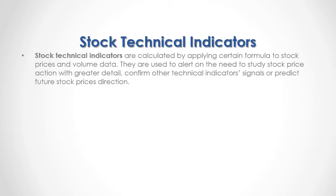Stock technical indicators are calculated by applying certain formulas to stock prices and volume data. They are used to alert on the need to study stock price action with greater detail, confirm other technical indicator signals, or predict future stock price direction.